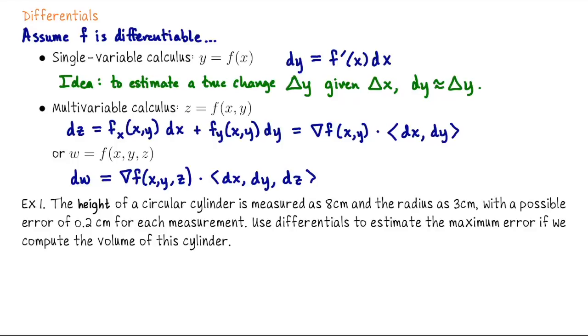In this problem, the height of a circular cylinder is measured as 8 cm and the radius as 3 cm, with a possible error of up to 0.2 cm for each measurement. Use differentials to estimate the maximum error in computing the volume.